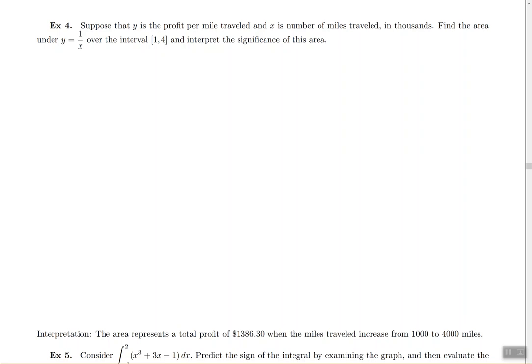Example 4 says, suppose that y is the profit per mile traveled and x is the number of miles traveled in thousands. Find the area under the graph of y equals 1 over x over the interval 1 to 4.